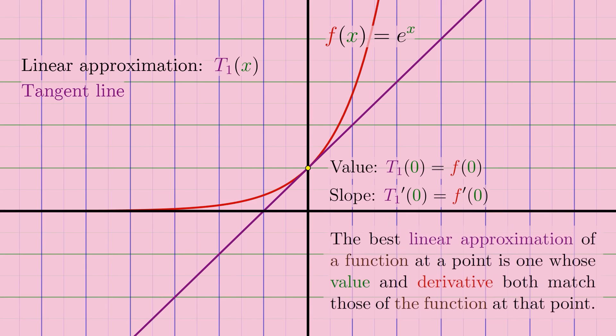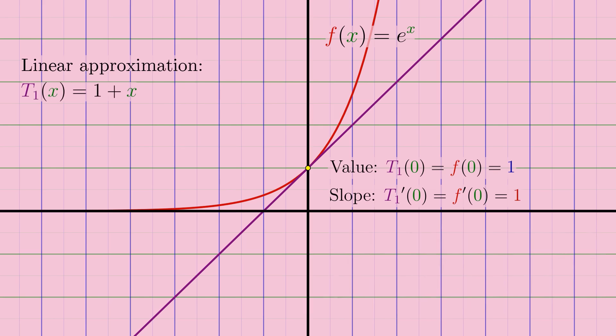In other words, the best linear approximation of a function at a point is one whose value AND derivative both match those of the function at that point. Now the value of e to the x at x equals zero is just one, and the same goes for its derivative. So the ideal linear approximation for e to the x near x equals zero is just the function one plus x.